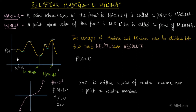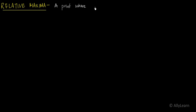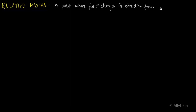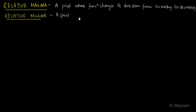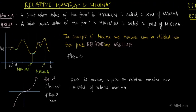Now let's build the definition from here. If to the left of C the function is increasing, and to the right of C it is decreasing, then: a point where the function changes its direction from increasing to decreasing is called a point of relative maxima. Similarly for relative minima: to the left of D the function is decreasing, and to the right it is increasing — a point where the function changes its direction from decreasing to increasing is called a point of relative minima.